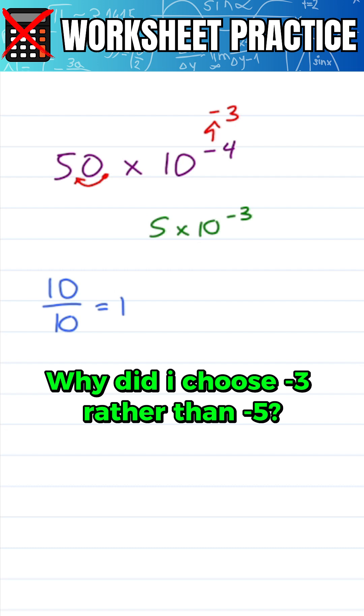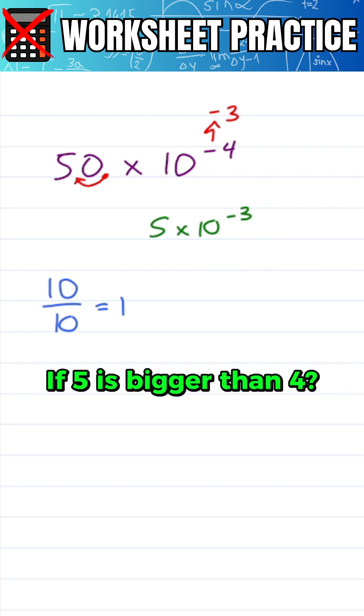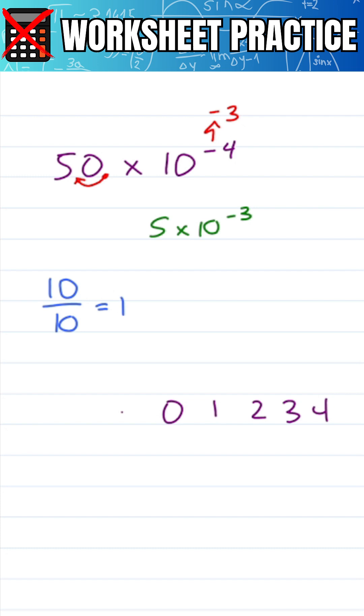Why did I choose minus 3 rather than minus 5 if 5 is bigger than 4? If we start with 0, to make it larger, we'll count 1, 2, 3, 4. To make it smaller, we count down minus 1, minus 2, minus 3, and so on. That means minus 4 is made larger by going to minus 3.